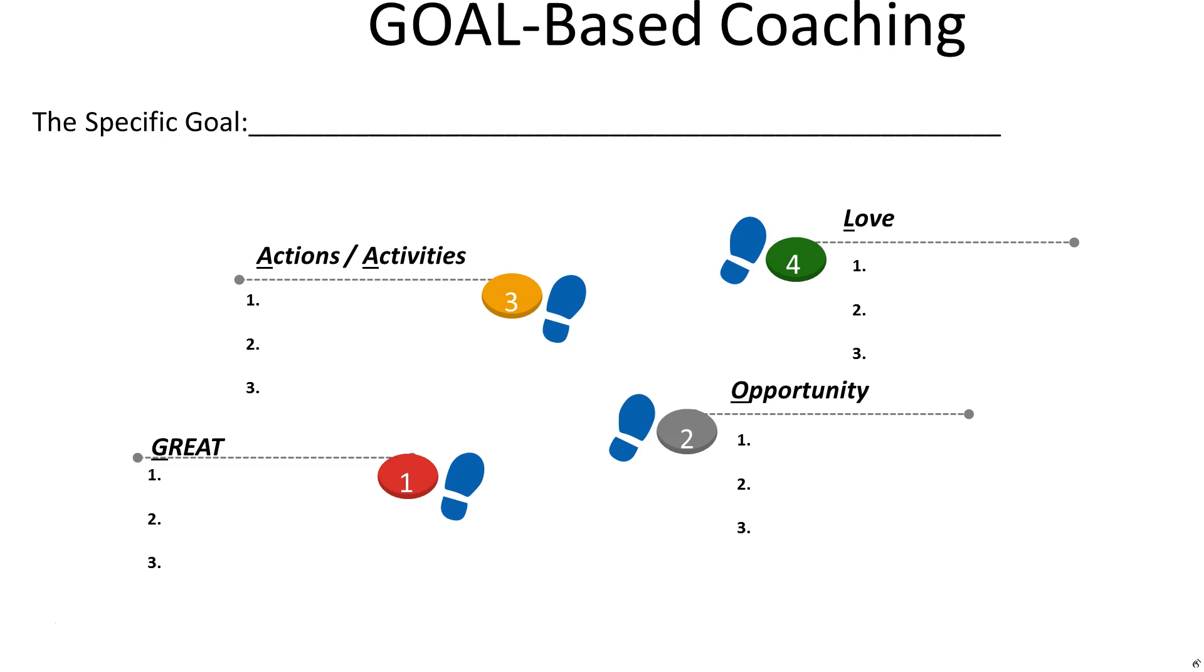Love. What will you love about achieving this goal? And that's the emotional attachment. So each one of these areas provide insight to what the employee wants to achieve and what they see as possible outcomes of what this goal may do for them.